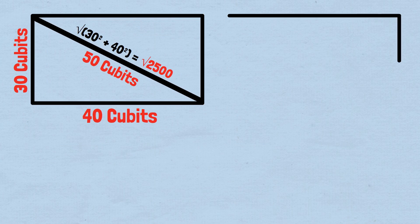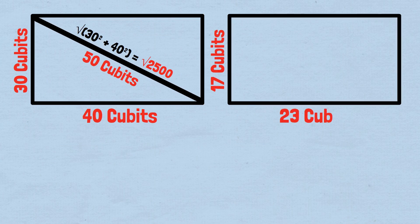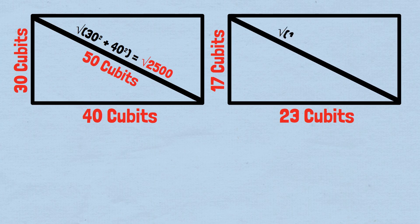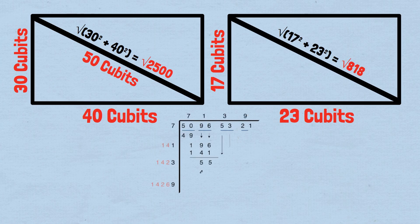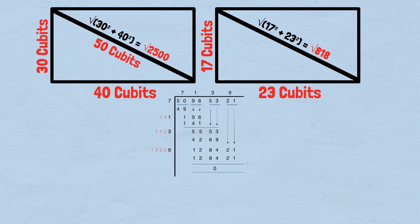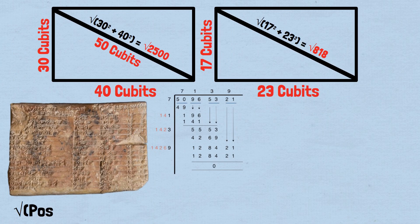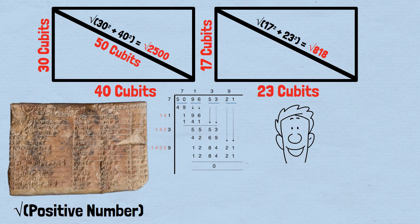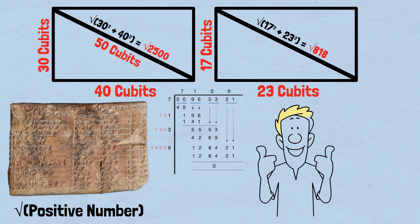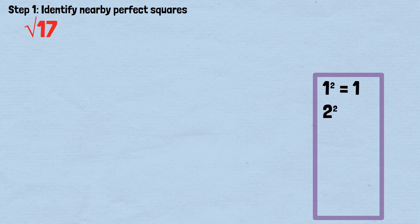But for dimensions like 17 by 23 cubits, they needed to calculate √(17² + 23²) = √818, which requires the square root algorithm. The Babylonian technique follows a logical algorithm that can be applied systematically to find the square root of any positive number. To find the square root of 17, step 1: identify nearby perfect squares — 1²=1, 2²=4, 3²=9, 4²=16, 5²=25.